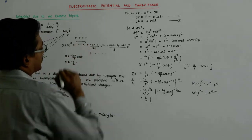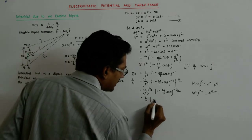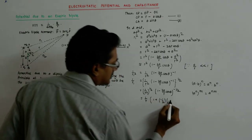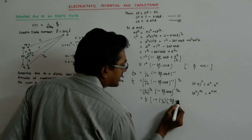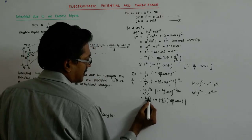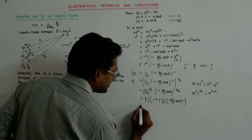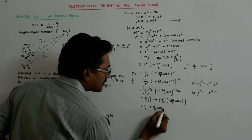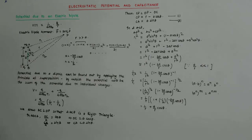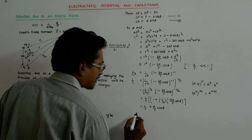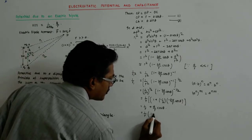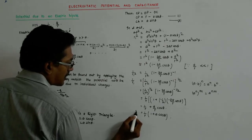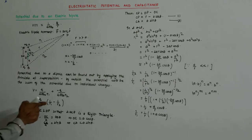So I take only these two values. It becomes 1 plus — what is my n? Minus half, and x is minus 2a upon r cos theta. So that becomes 1 upon r — the 2 cancels — plus a upon r cos theta. So it actually becomes 1 upon r into 1 plus a cos theta upon r. This is 1 upon r1, because I'll require this here.